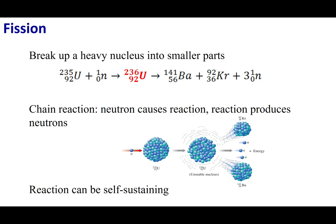The fission process is the basis of some nuclear weapons and our nuclear power plants. Uranium-235 is a bigger nucleus than iron-56, so we can crack it open and release energy by making smaller nuclei. One way to do this is to bombard it with neutrons, forming the super unstable nucleus uranium-236, which readily breaks up into barium-141, krypton-92, and generates three neutrons.